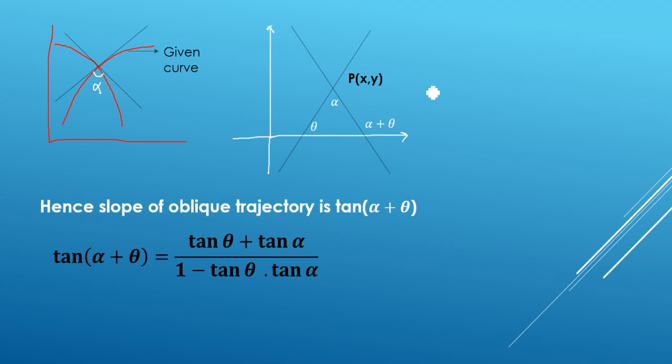Now this angle is theta, because this is the x-axis, this is inclination, this is theta. Now this is the given curve. This is given curve. This is oblique trajectories. So what do we do? We always take those two tangents. So these two are tangent. So this tangent is given curve.